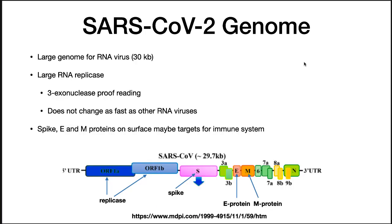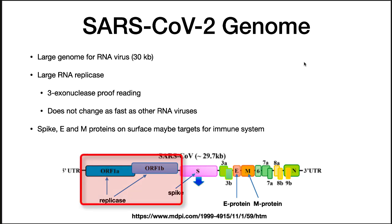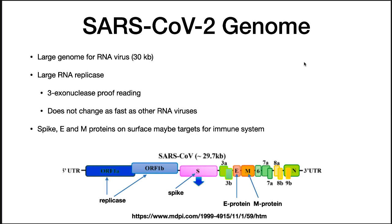The SARS-CoV-2 genome is 30,000 base pairs long, and it is an RNA virus — this is very large for an RNA virus. The first two genes, ORF1A and ORF1B, encode the polyproteins which make parts of the replicase. The large RNA replicase is unusual in that it encodes a 3-prime exonuclease, which is a proofreading activity, so when it copies its genome, it is actually able to go back and fix mistakes. This is probably necessary because of the large genome.